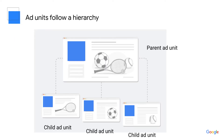Let's talk about your inventory structure. Imagine laying all the printed pages of your website out and creating a hierarchy of pages flowing from your homepage to different subpages. For example, a sports publisher has a homepage and then subpages for tennis, soccer and baseball. Your ad units should follow a similar structure to this hierarchy of pages to help keep your inventory organized. To do this, you'll use what we call parent and child ad units. This publisher might create a parent ad unit on their homepage and lower-level child ad units on the tennis, soccer and baseball pages.